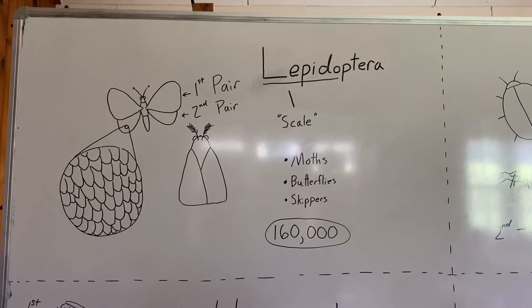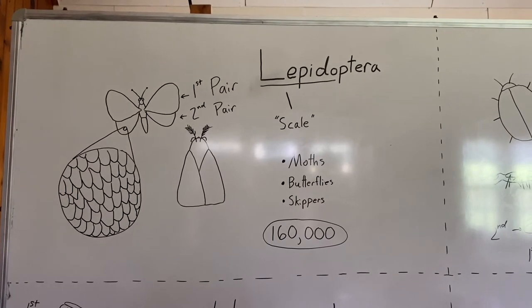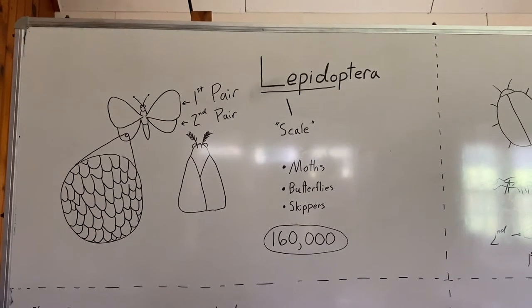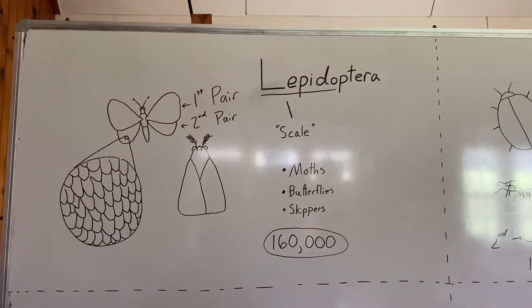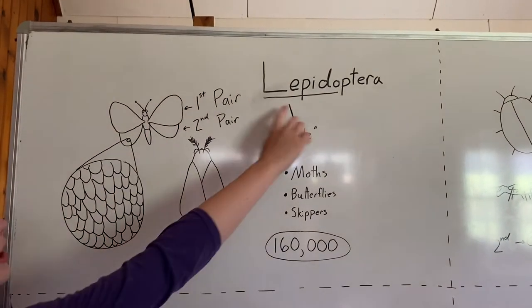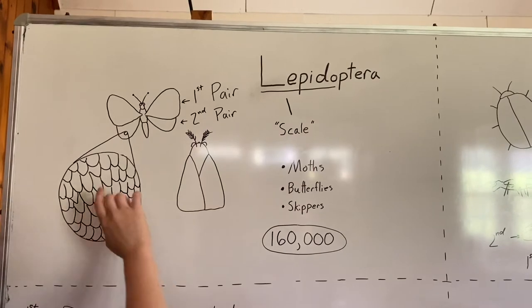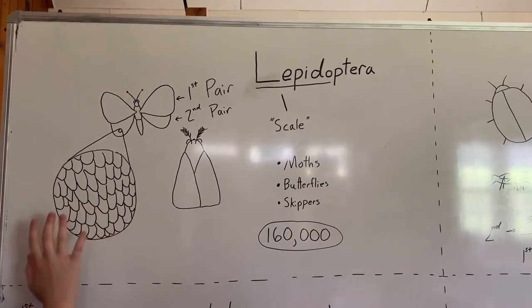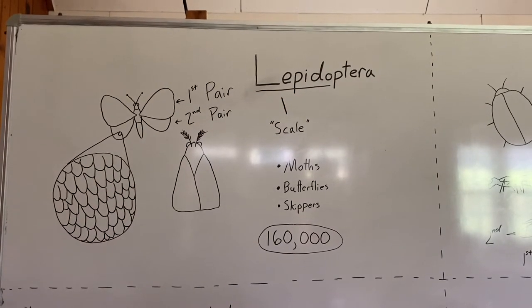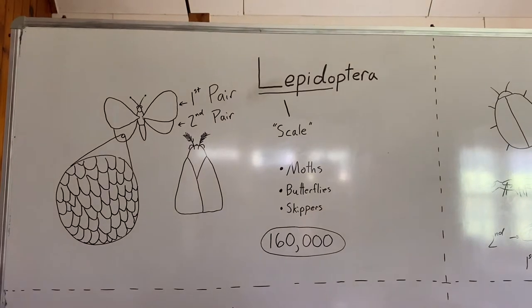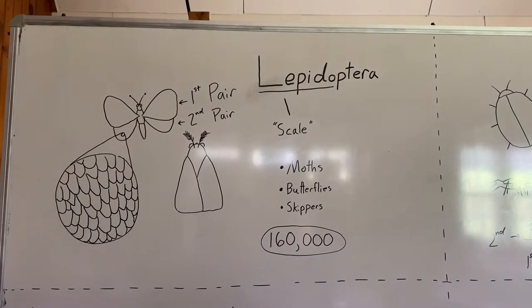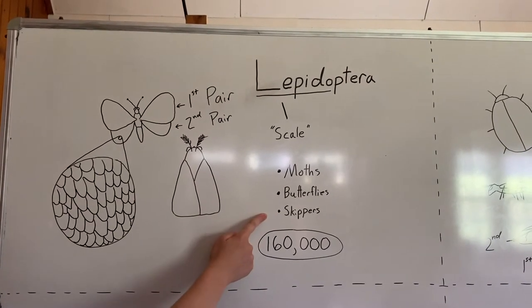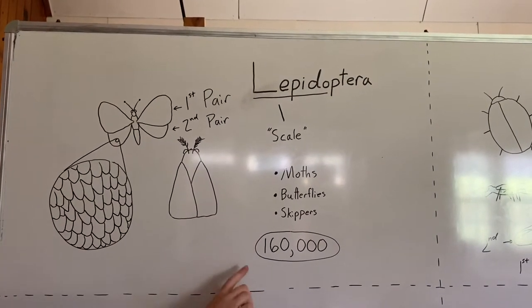The first, probably most familiar order of insects is Lepidoptera — that's the moths and butterflies. Like most of the insect orders, it's named after a defining feature of the wings. Lepidop means scale. If you look really closely at the wings of moths and butterflies, you'll see a tiny scale pattern. If you accidentally brush up against a moth or butterfly, a dust will come up on your hands — that's the scales coming off. This includes moths, butterflies, and skippers, and there are about 160,000 species around the world.